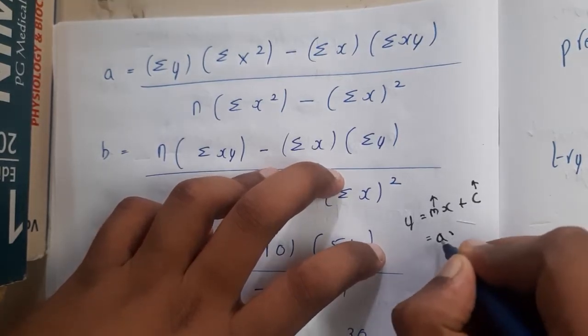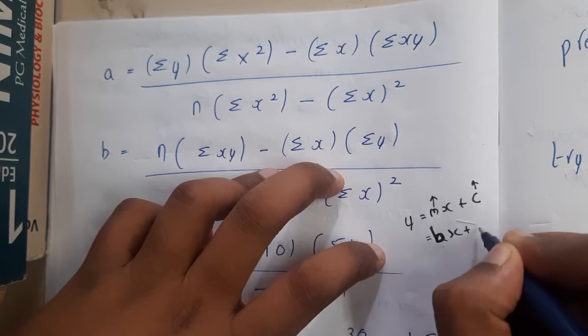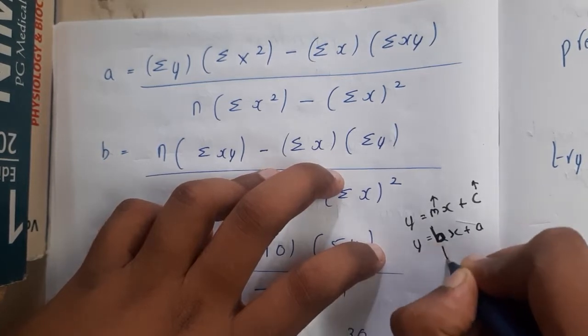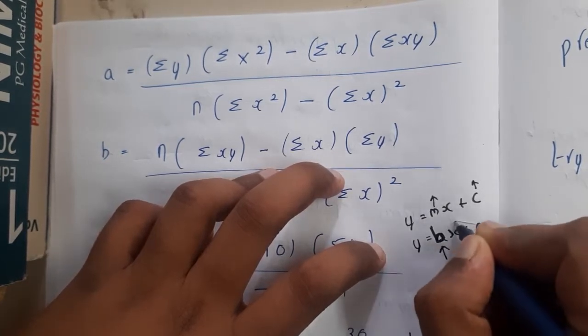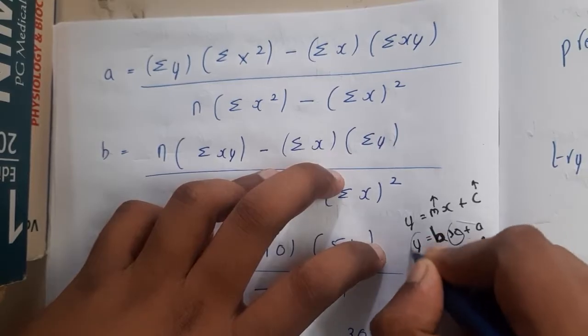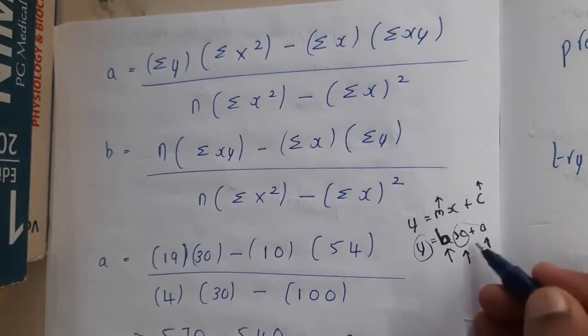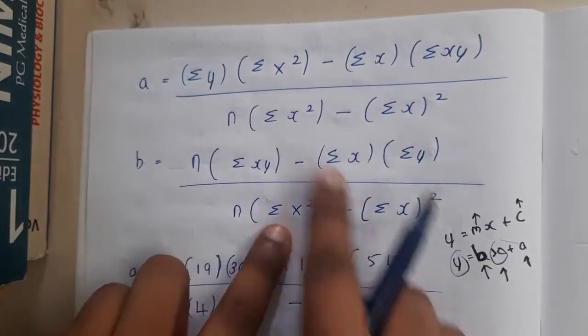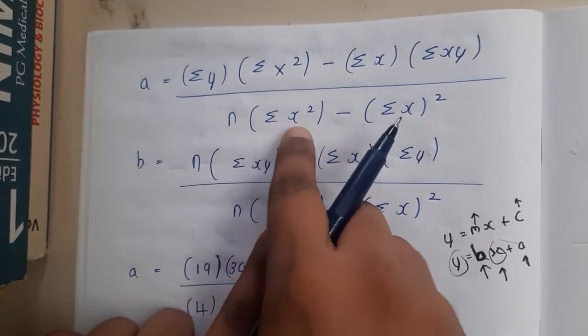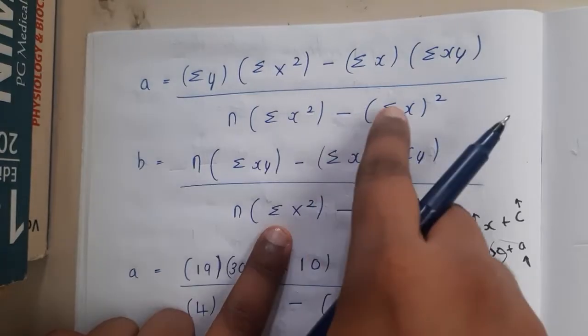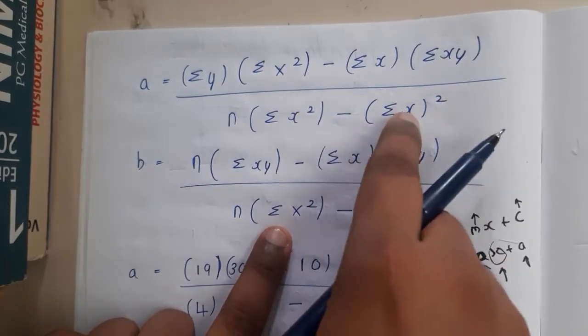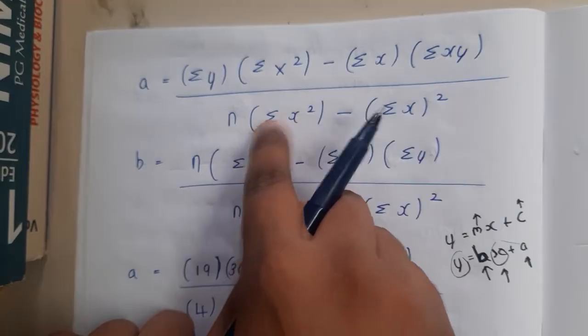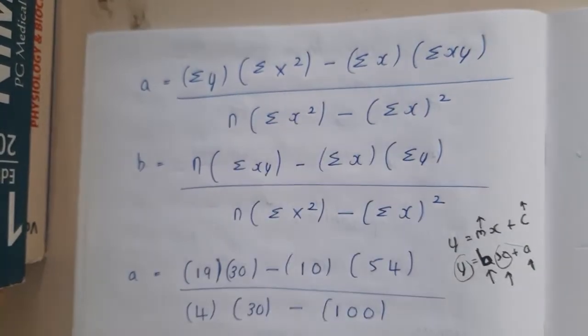What are the unknown values here? We don't know m and we don't know c. Assume m as b and c as a. This is the formula. Here we are trying to find a and b, and based on our x values we are going to predict the y value. To find a and b, these are the two formulas. In both formulas the denominator is the same: n into sigma x square minus sigma x whole square.